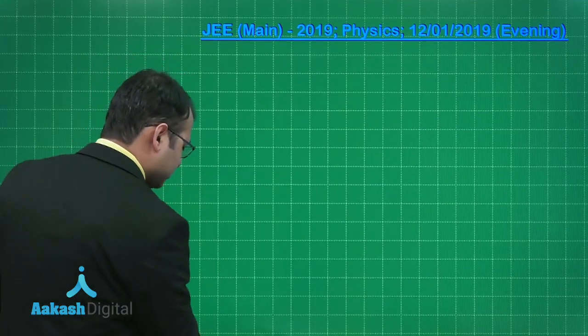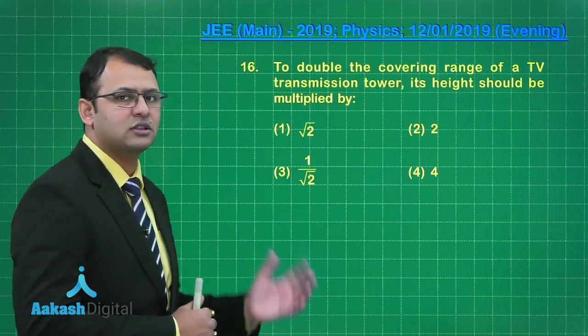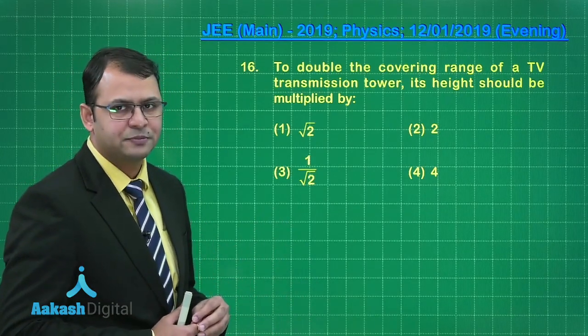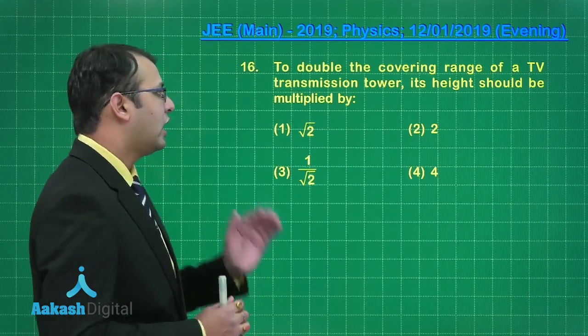Let's take our next question, question number 16. This question belongs to the section of communication system, that is modern physics. The question asks: in order to double the covering range of a TV tower, the height should be multiplied by...